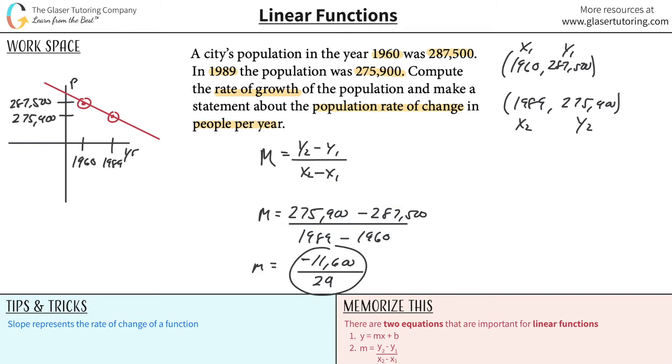So now, what we have is we can simply now take this and now find the division result of this. This is the amount of people that changed over the 29 years. But now what happens if I want to find the amount of change per year? Let me just do the division. So it's going to be negative 11,600 divided by 29.